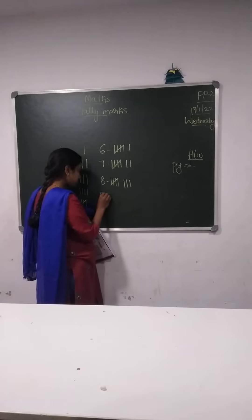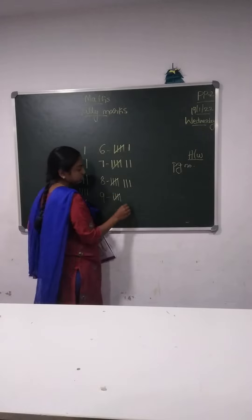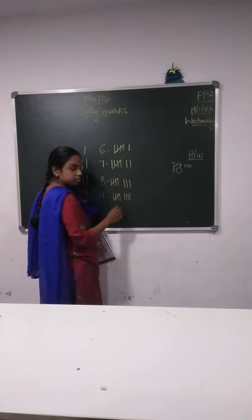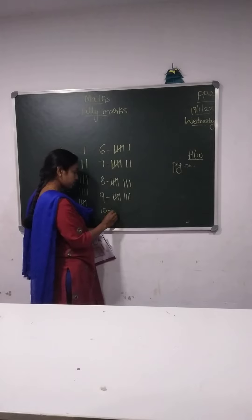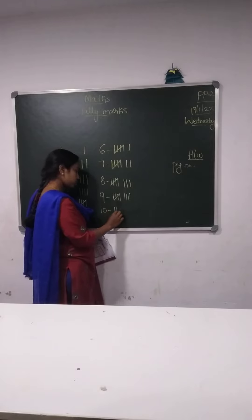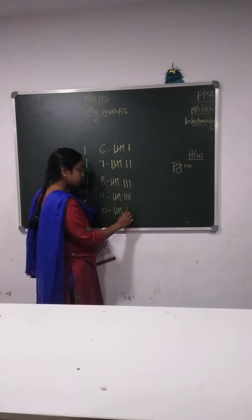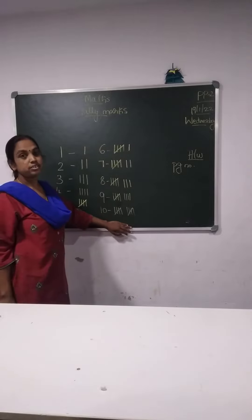Then next is 9 — 1, 2, 3, 4, 5, 6, 7, 8, 9, 10. So this is called tally marks.